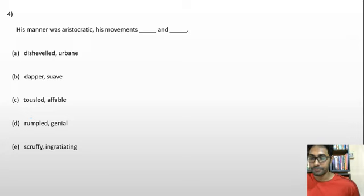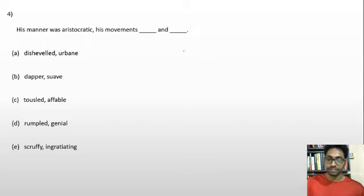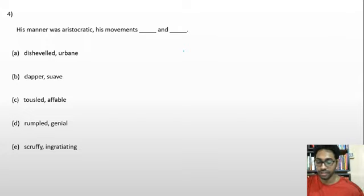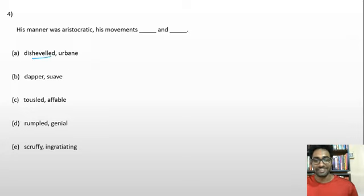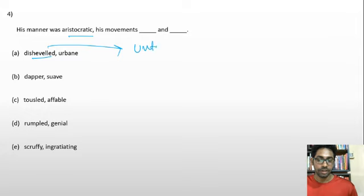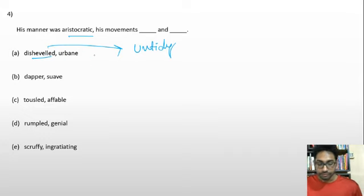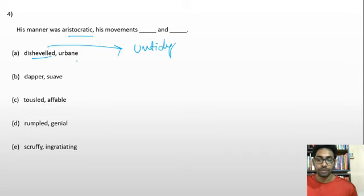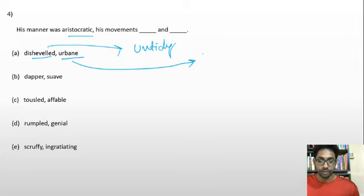Next sentence: 'His manner was aristocratic. His movements ___ and ___.' Option A: disabled and urbane. Disabled means untidy. If his manner is aristocratic, it can't be untidy. Definitely eliminated. Urbane means very refined, suave, or sophisticated — that could fit, but disabled rules out option A.